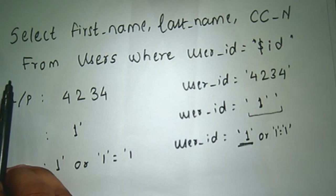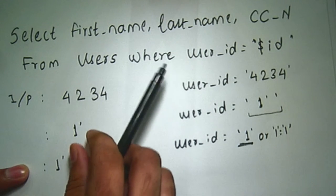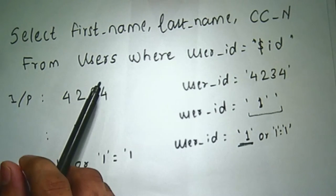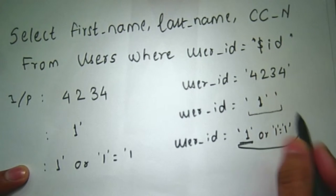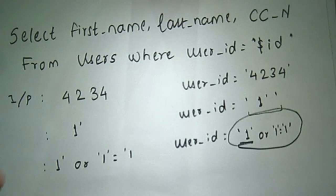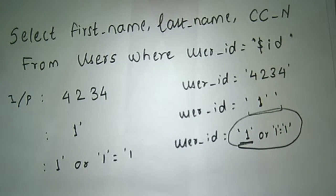Why has this happened? Because the SQL query was: SELECT first_name, last_name, credit_card_number FROM users WHERE user_id = this. As I said, the second part of the OR condition is always true. Therefore, when this user_id is matched against the records in the database, it is going to be true for all records, and therefore it displays all records stored in the database.